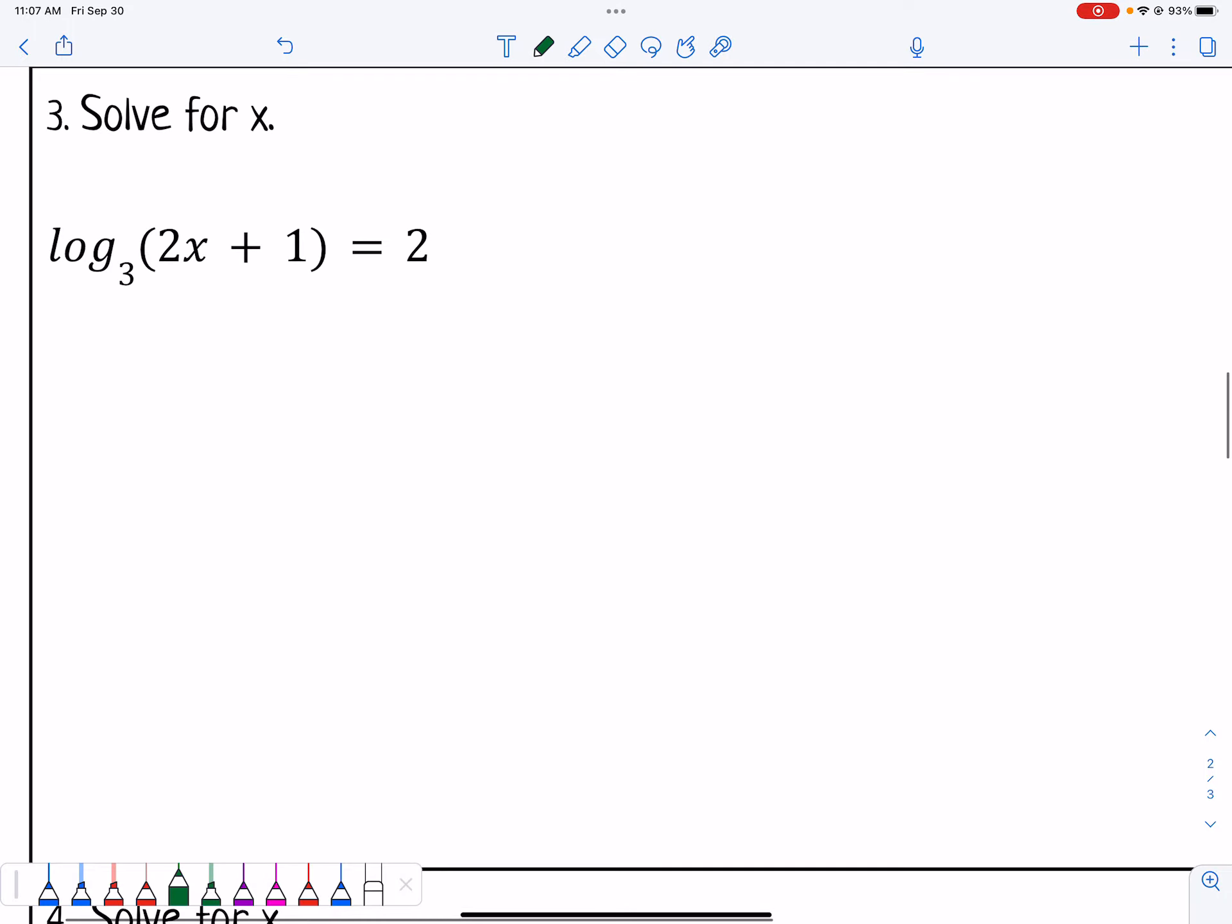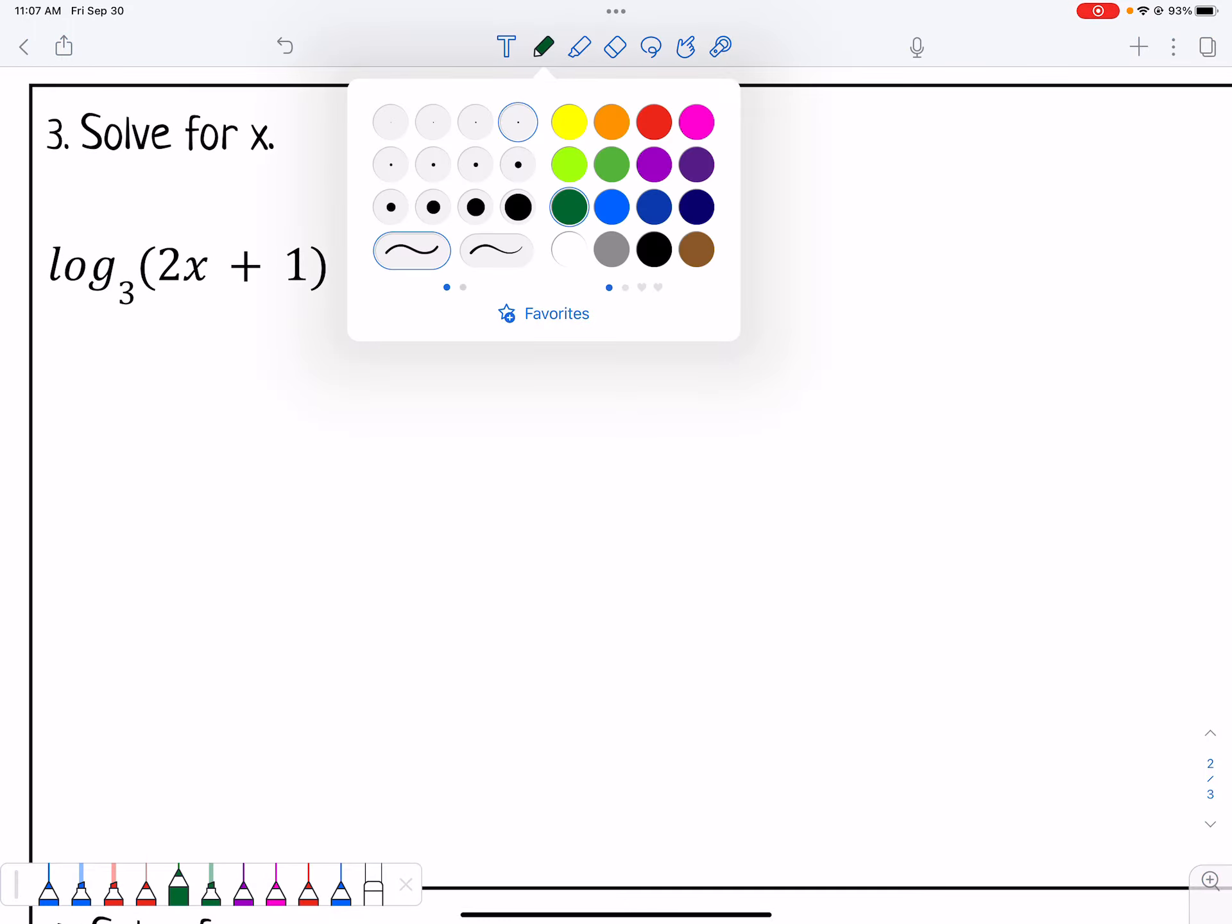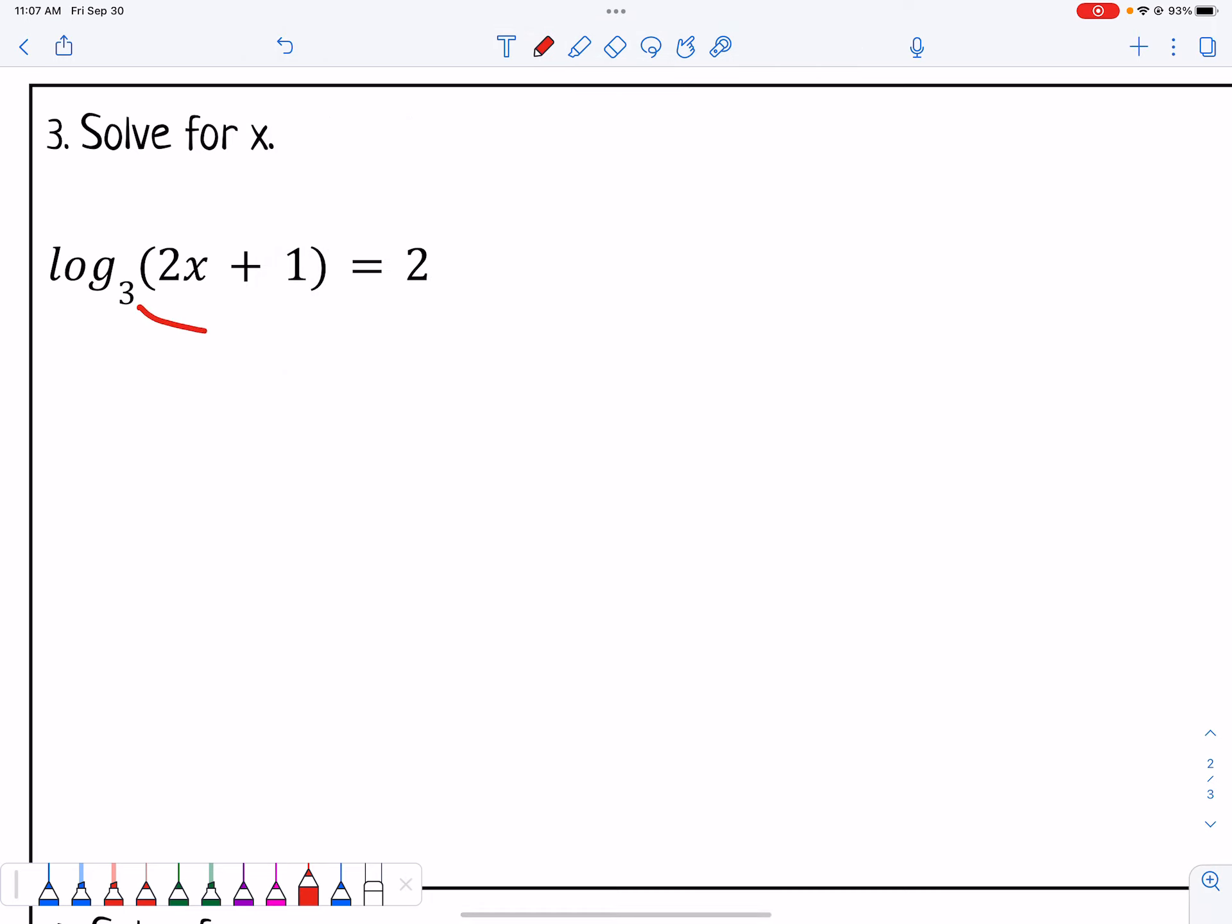Moving on to number 3, I need to solve for x. I only have 1 log, so that means I need to rewrite it in exponential form. I'm going to say that's 3 squared equals 2x plus 1. And then 3 squared is 9. I can solve it like any other linear equation. Subtract 1, and I get 8. Then 8 equals 2x. Divide both sides by 2, and I get x equals 4.